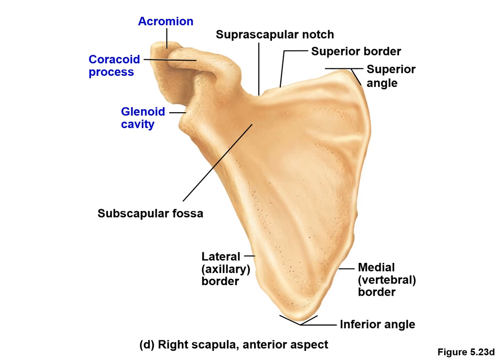On the anterior surface, the body of the scapula has a broad indentation called the subscapular fossa. On its lateral surface is a shallow depression called the glenoid cavity, which forms the shoulder joint with the humerus.